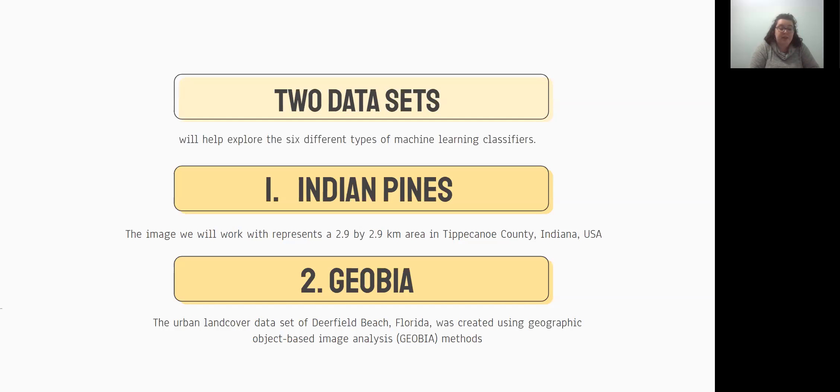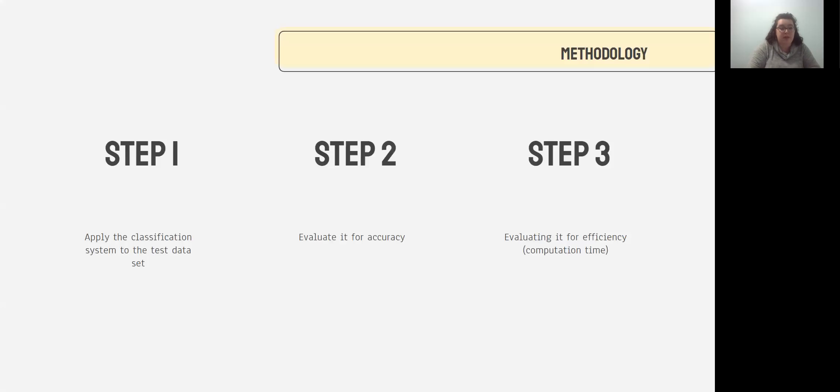Before jumping into the methods, I'm going to explain in overview what the authors are going to do with each method, which is first they're going to apply the classification system to test the data set. And then they're going to evaluate what they get from the machine in terms of accuracy. And then they're going to evaluate it for efficiency.